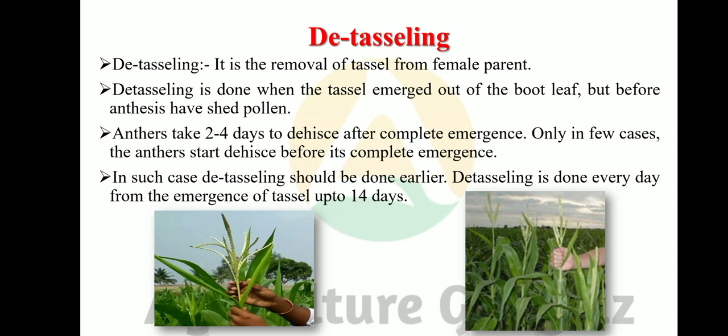Detasseling in maize: Detasseling is the removal of the tassel from the female parent. It is done when the tassel emerges from the boot leaf but before anthesis. In maize, protandrous condition is generally present, which promotes cross-pollination. The anther takes two to four days to dehisce after complete emergence. In a few cases, dehiscence starts before complete emergence — in such cases, detasseling should be done earlier, every day from tassel emergence up to 14 days.